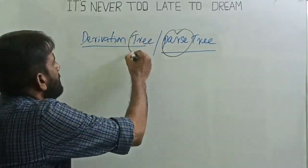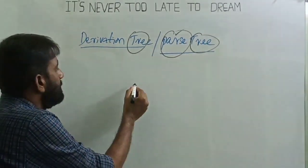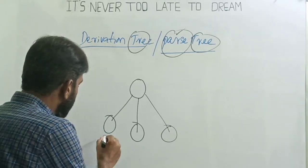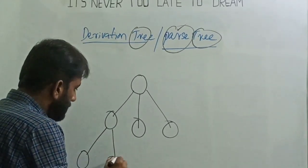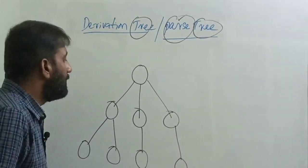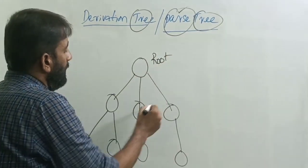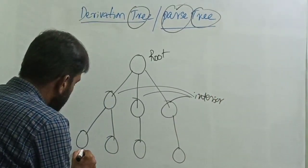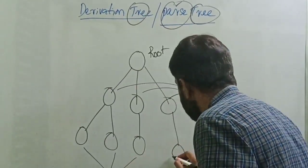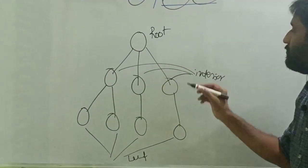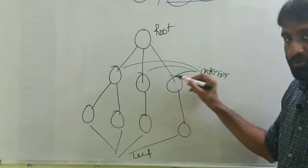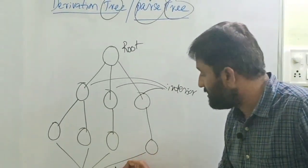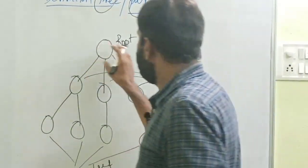So what is a parse tree? Generally it is a tree. In computer science, a tree is represented with a root node and child nodes. A node can have two or more child nodes. In a tree, the topmost is the root node, the intermediate ones are interior nodes, and the ones at the bottom are leaf nodes. The root node is the starting node. Interior nodes are nodes which have child nodes. Nodes which don't have any child nodes are called leaf nodes.